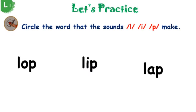Now it's your turn. Let's circle the word that the sounds L, E, P make. Use your flashcards and blend these letters to get the word.